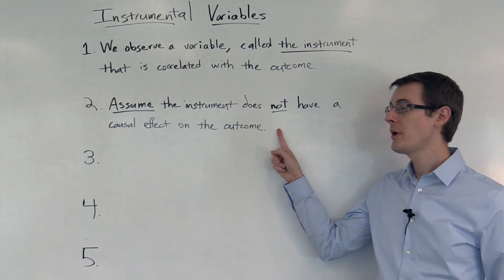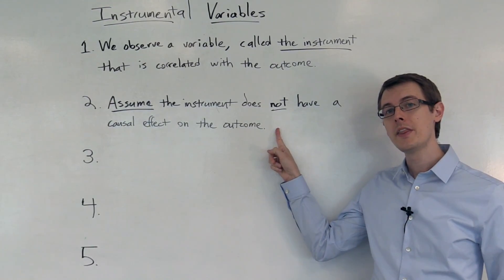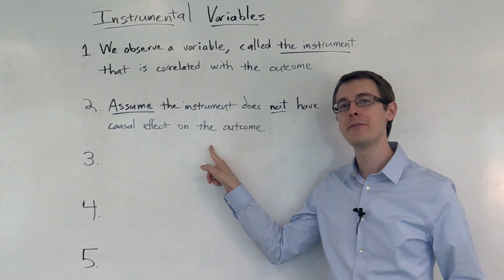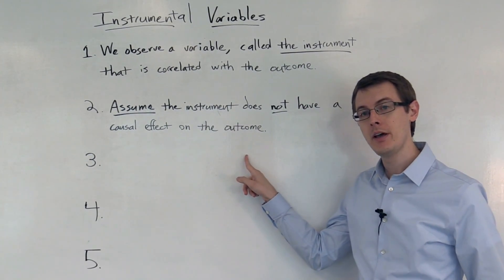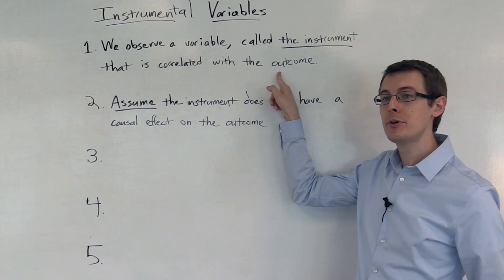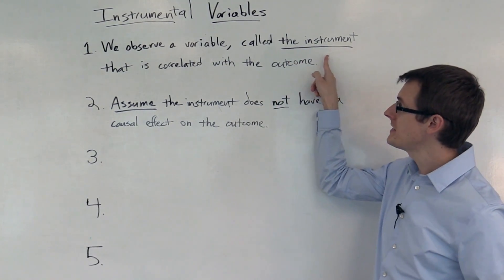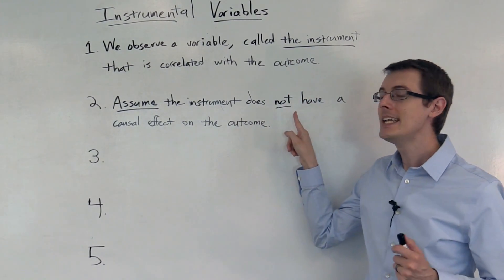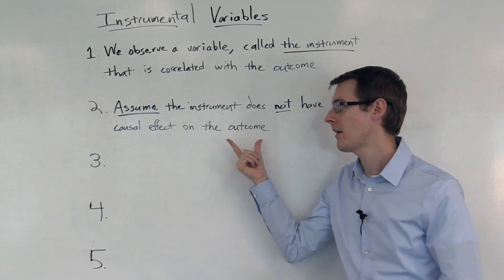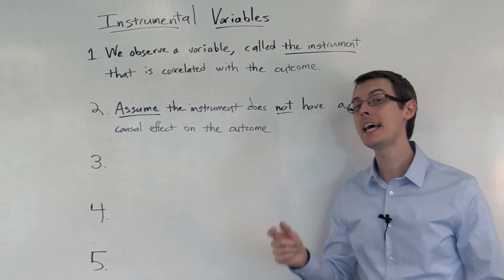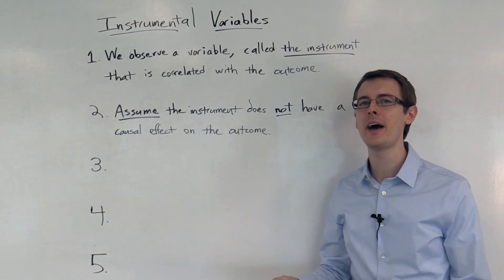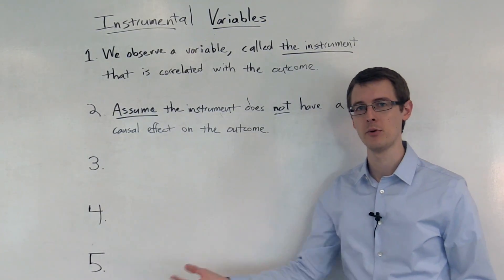Step 2: We assume that the instrument does not have a causal effect on the outcome variable. So the correlation we see between the instrument and the outcome is not because the instrument has a causal effect on the outcome variable. Instead, that correlation is picking up the effect of some confounding variable.